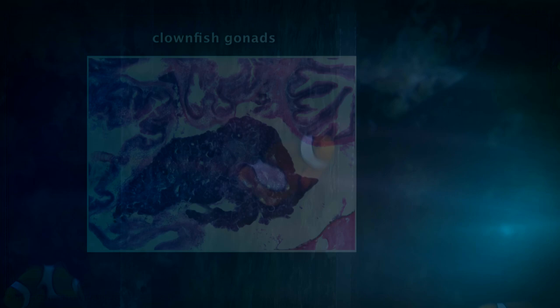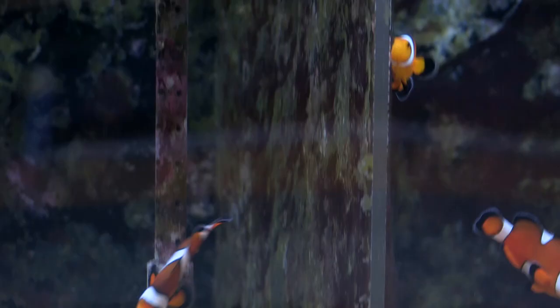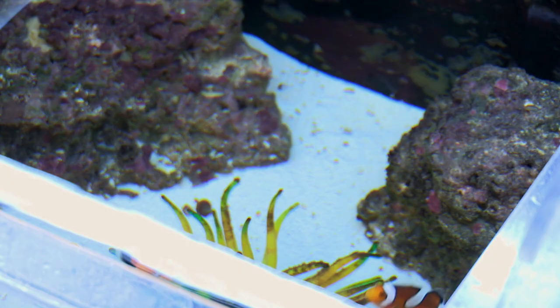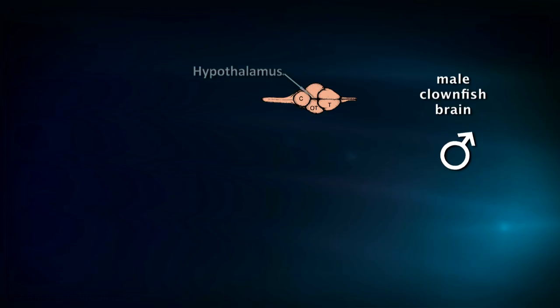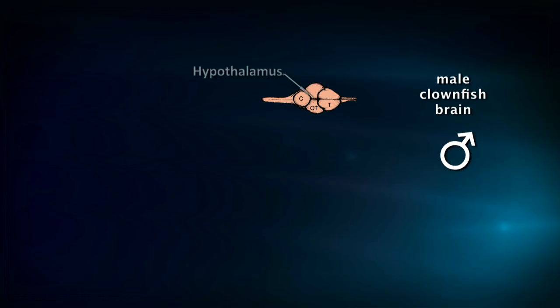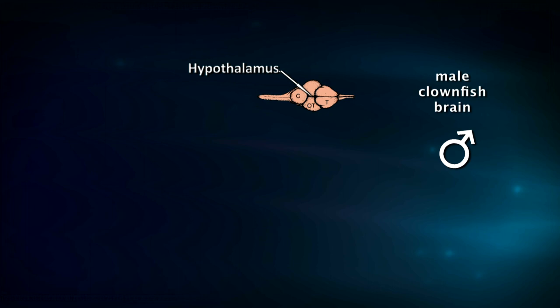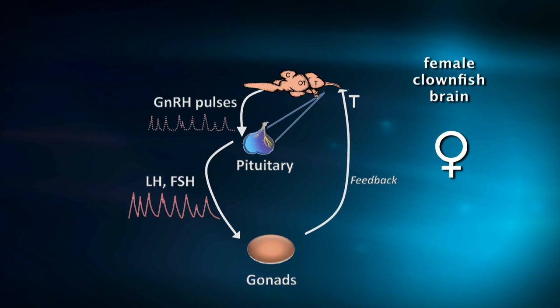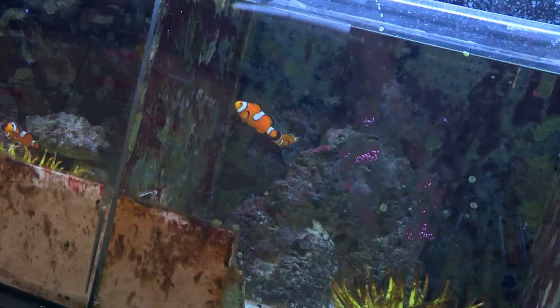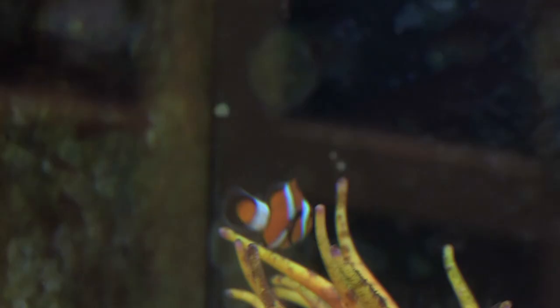The clownfish has both testicular tissue and ovarian tissue, so it's a matter of just encouraging one or the other tissue to develop. It's unclear exactly what signals they're using — probably mostly vision and maybe some olfaction and maybe even sound. That probably communicates to the hypothalamus and areas of the brain that communicate to the pituitary gland, a little gland right below the brain which releases hormones into the blood that communicate to the gonads, causing testes to absorb and ovaries to develop, and morphology to change and completely reverse the behaviors.